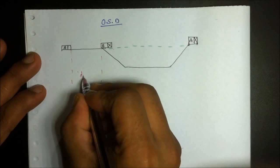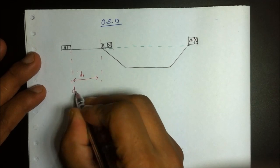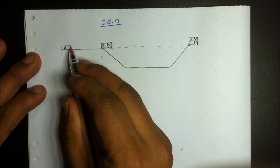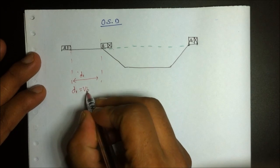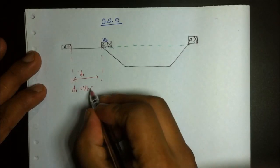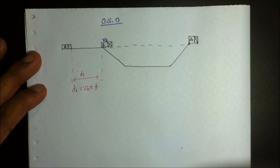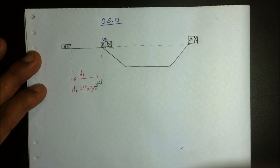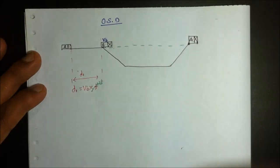The proper distance for which vehicle A is deciding whether to overtake B or not is the distance D1. D1 is denoted as D1 equals VB (velocity of vehicle B) multiplied by the time interval taken in making the decision. This time interval is generally taken as two seconds.